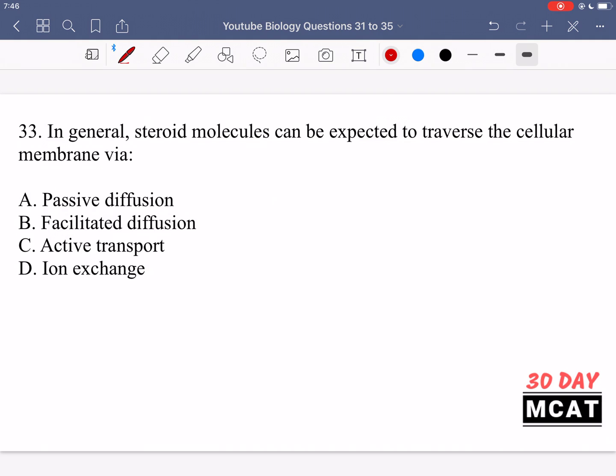In question 33, it says in general, steroid molecules can be expected to traverse the cellular membrane via what type of transport or diffusion?